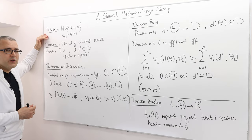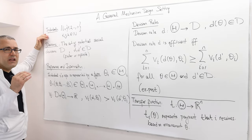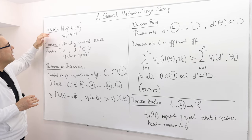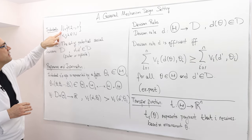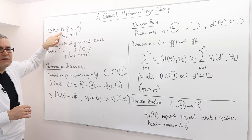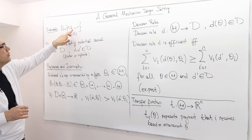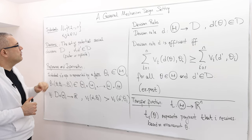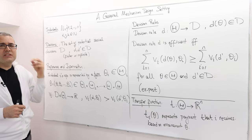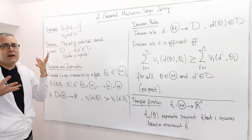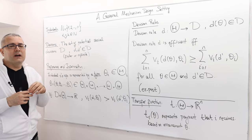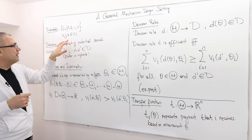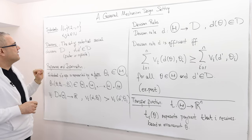First off, we look at a finite number of individuals or players. We use the notation capital N to describe the set of individuals: 1, 2, all the way up to N. So N is greater than or equal to 2. A standard description of a player is going to be i, j, or k, which is in N.